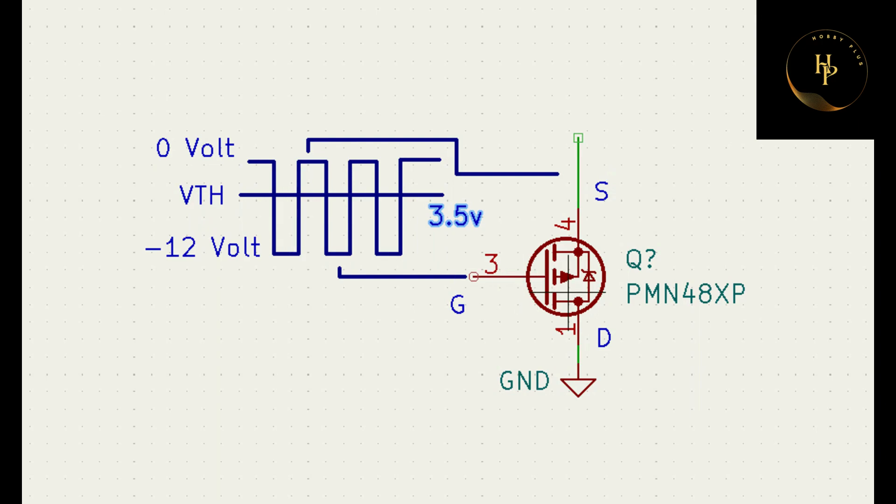If not, then you cannot turn on this MOSFET. In P-channel MOSFET, when threshold voltage is 3.5 volt and you get minus 12 volt across MOSFET gate to source, not drain. You always remember that.